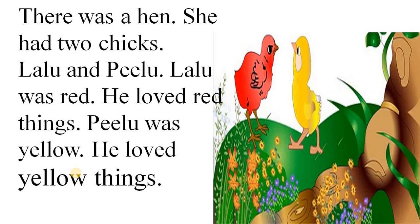There was a hen. She had two chicks, Lalu and Peelu. Lalu was red. He loved red things. Peelu was yellow. He loved yellow things.